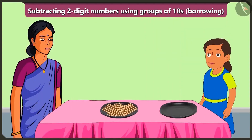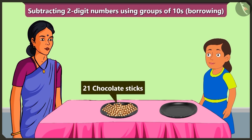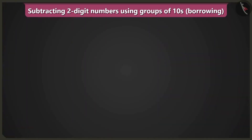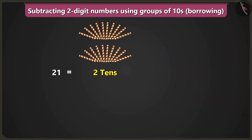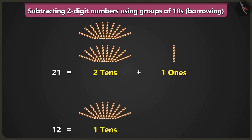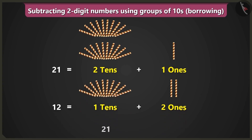Wow, chocolate sticks! I will take twelve sticks. Bubbly, there are a total of twenty-one chocolate sticks. If you will take twelve sticks from a total of twenty-one sticks, then how many sticks would Bunty get? To know this, we will subtract from two tens and one ones — twenty-one — twelve, which is one ten and two ones. So how many would twenty-one minus twelve be?